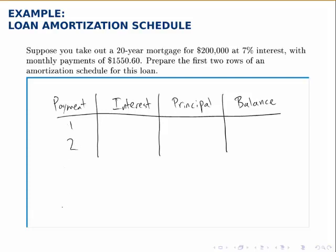In theory, we can continue this process for as many payments as we want. We could use a spreadsheet to lay it out for all the payments of the loan — all 240 payments of this 20-year mortgage. But since we're doing this by hand, we'll just do the first two and illustrate the process. The other columns are the interest column, which specifies how much of the payment goes toward interest, and the principal column. Those two numbers will always add up to the fixed monthly payment of $1,550.60. The remaining balance is also listed after each payment, starting at $200,000.